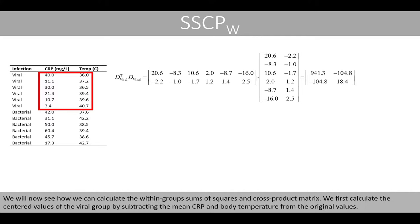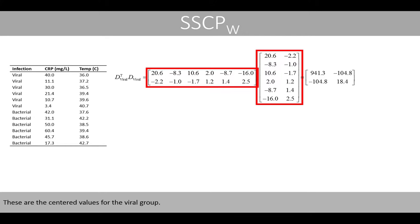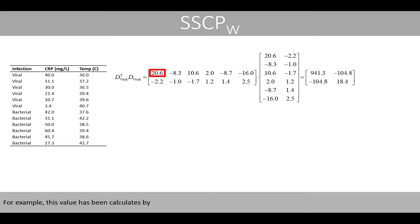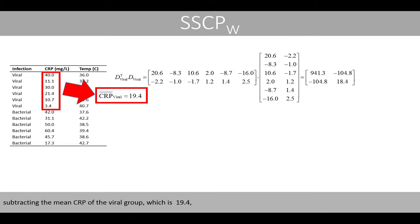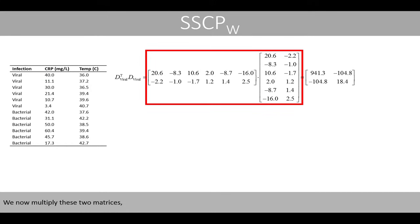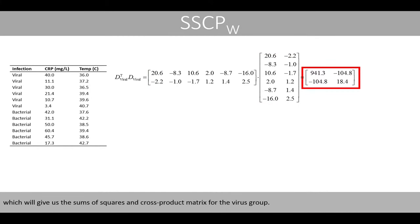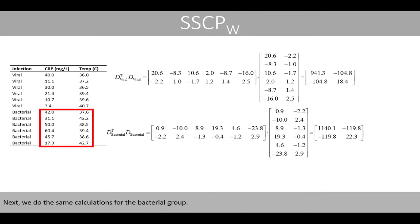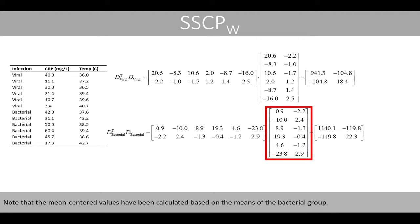We will now see how to calculate the within-groups sums of squares and cross-product matrix. We first calculate the centered values of the viral group by subtracting the mean CRP and body temperature from the original values. These are the centered values for the viral group. For example, this value has been calculated by subtracting the mean CRP of the viral group, which is 19.4, from the CRP value of the first person. We then multiply these two matrices, which gives us the sums of squares and cross-product matrix for the viral group. Next, we do the same calculations for the bacterial group, where the mean-centered values have been calculated based on the means of the bacterial group.